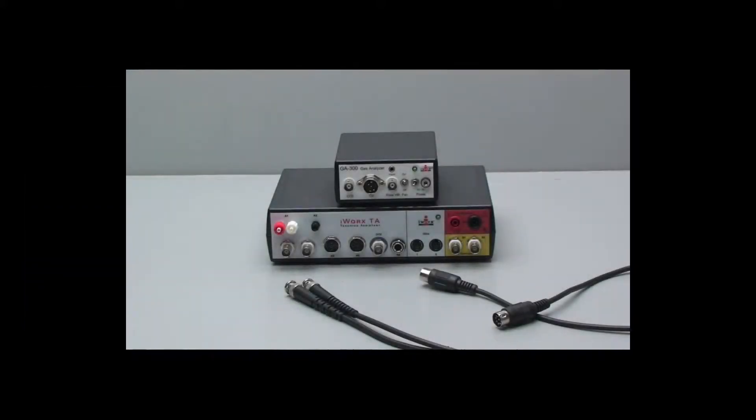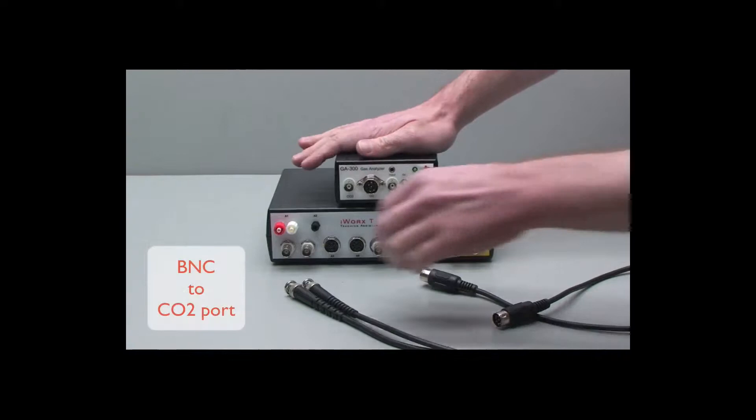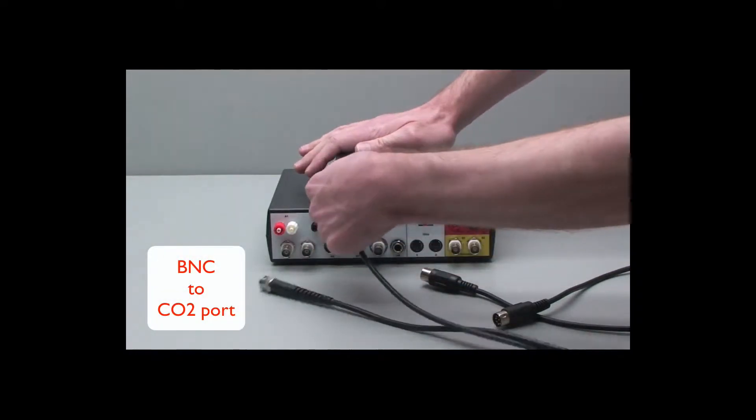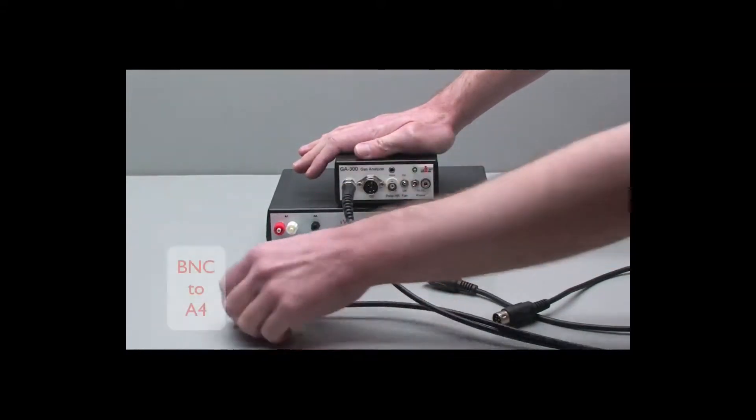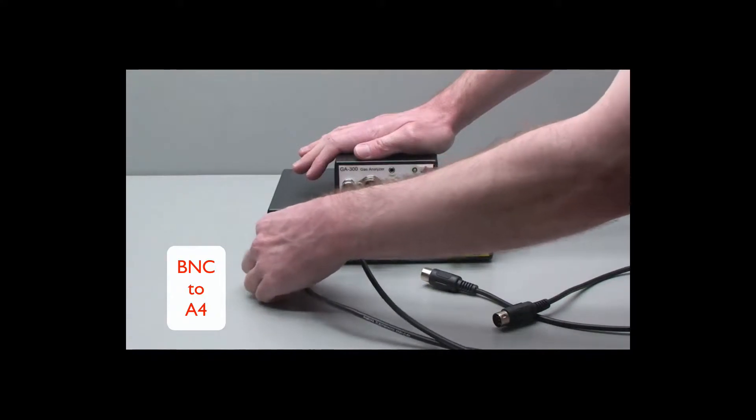To set up the components, take the BNC to BNC cable, connect one end to the CO2 port, and the other one to channel A4 on the front of the TA.